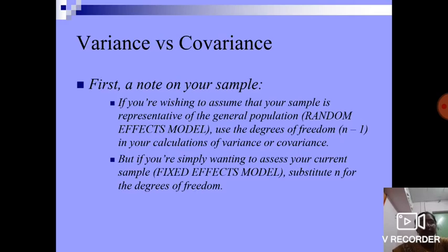Variance versus covariance. First, a note on your sample. If you are wishing to assume that your sample is representative of the general population, which is random effects model, use the degrees of freedom n-1 in your calculations of variance or covariance. But if you are simply wanting to assess your current sample, which is fixed effects model, substitute n for the degrees of freedom.